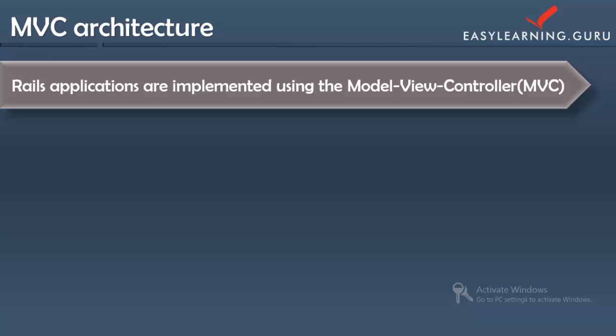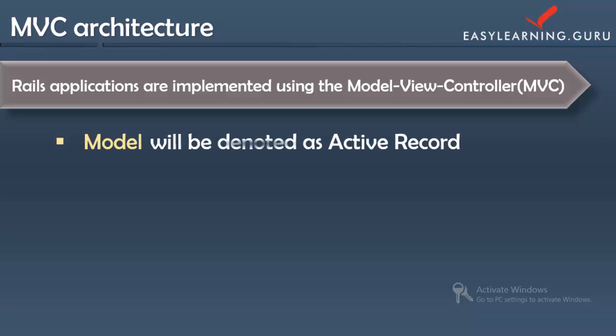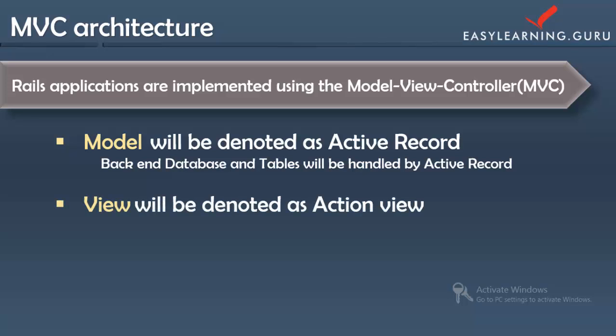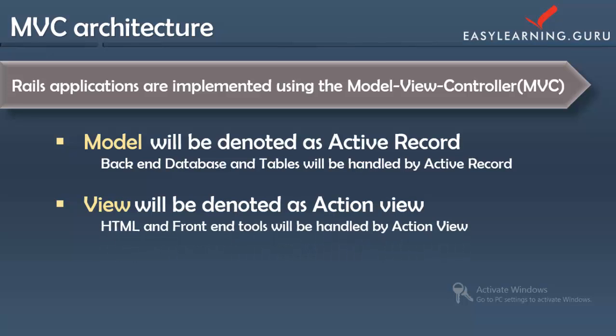The Model will be denoted as Active Record. It refers to the data object that we use — it's the object-oriented approach to design which handles the backend database and tables. V stands for View, which is the presentation layer, also denoted as Action View. It's what the users see and interact with, essentially the web pages — the HTML, CSS, and JavaScript are used through this layer.